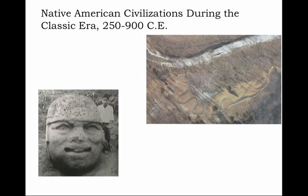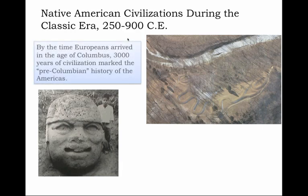Let's consider the range of native civilizations, particularly during the era we know as the classic era, 250 to 900 CE — the late part of which would be a good six centuries before the arrival of Europeans. The classic era of Native American history completely predated the arrival of Europeans. By the time Europeans arrived in the age of Columbus, 3,000 years of civilization marked the pre-Columbian history of the Americas.